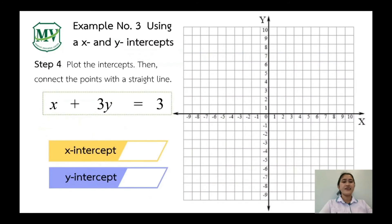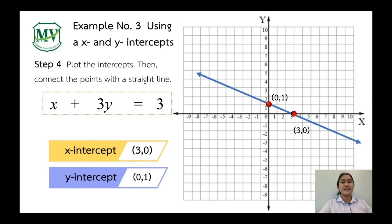Let's graph the points on our Cartesian plane. Our x-intercept is (3, 0) and our y-intercept is (0, 1). Once you plot the points, connect them with a straight line. This is the graph of x plus 3y equals 3.